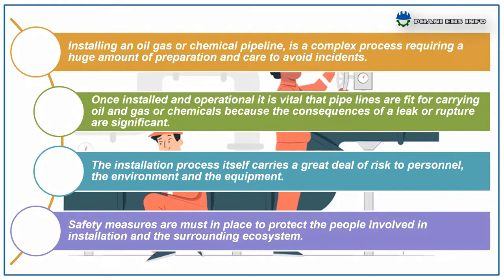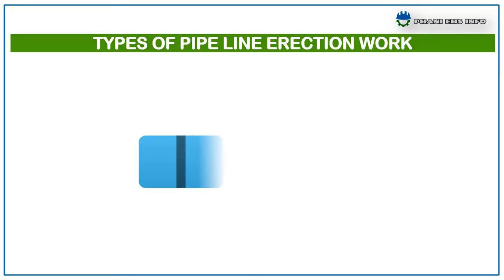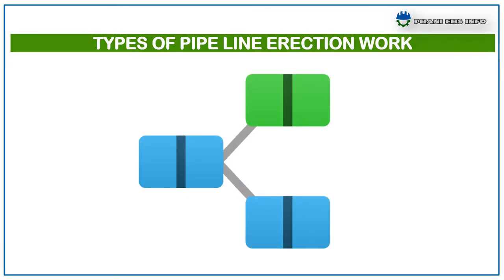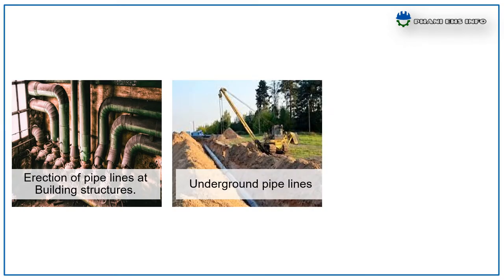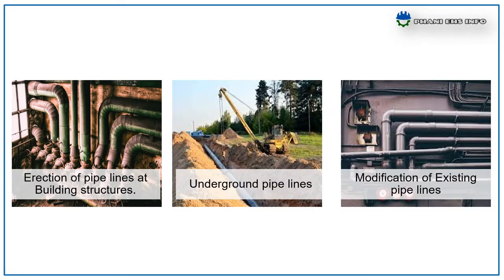Next: types of pipeline erection works. Based on the location, there are three types of pipeline erection works: erection of pipelines at building structures, underground pipeline works, and modification of existing pipelines such as at pipe racks or inside buildings. Let us see them one by one.